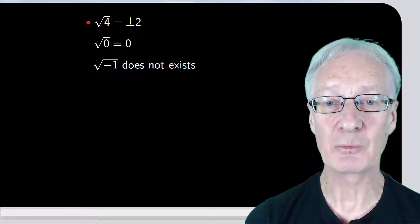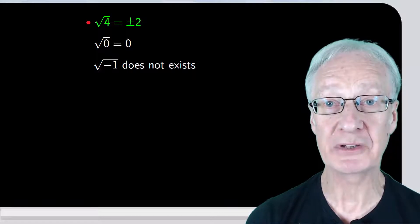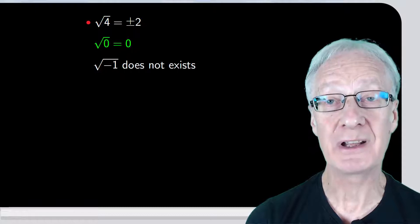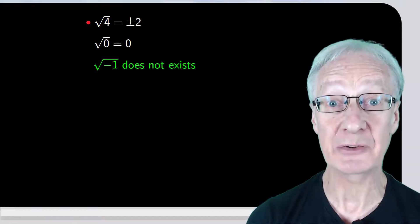In general, then, when dealing with real numbers, every positive number has two square roots, 0 has only one square root, and negative numbers don't have any square roots.